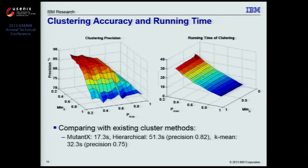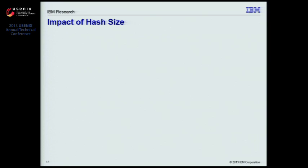We also compare MaltonX with existing clustering methods like hierarchical clustering and k-means clustering, and found it usually takes about half or a third of the running time with comparable accuracy.